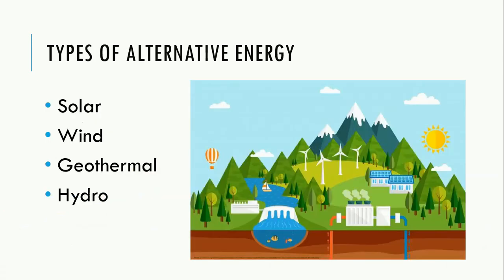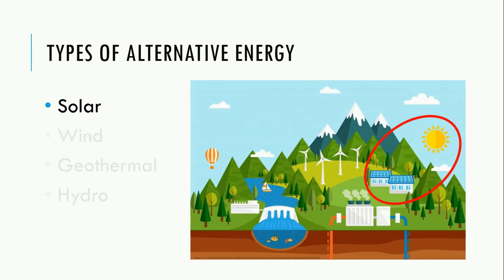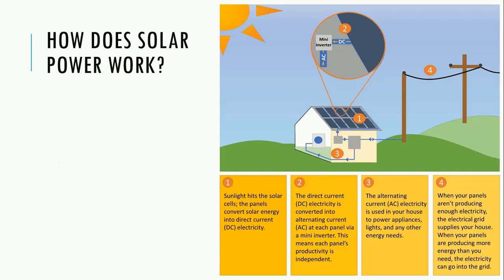Today, we're going to focus on four types of alternative energies: solar, wind, geothermal, and hydro. Solar energy is collected by solar panels that convert solar energy into direct current or DC electricity. A mini-inverter converts the DC into alternating current or AC electricity. The AC electricity can power the building, and any extra solar energy travels into the power grid.